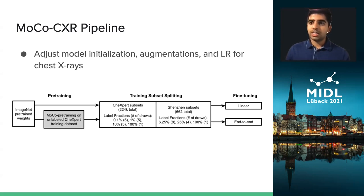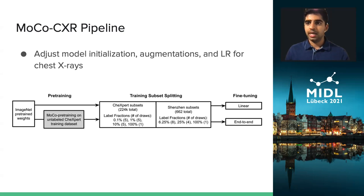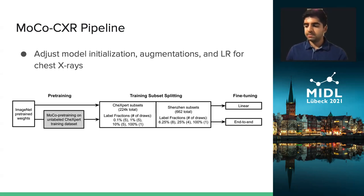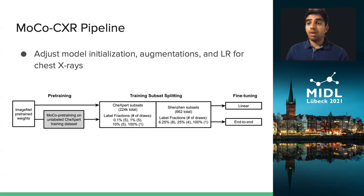We also tuned the learning rate for both the pre-training and fine-tuning steps to be more conducive for x-rays. To begin our experimental pipeline, we first performed MOCO CXR pre-training on the entirety of the Chexpert unlabeled dataset and also prepared counterpart ImageNet pre-trained models for a baseline comparison. We evaluated these models by fine-tuning them on different fractions of labeled training data and evaluating them on their respective Chexpert or Shenzhen test sets. We trained specifically linear and end-to-end models to evaluate both the representation and initialization quality respectively.